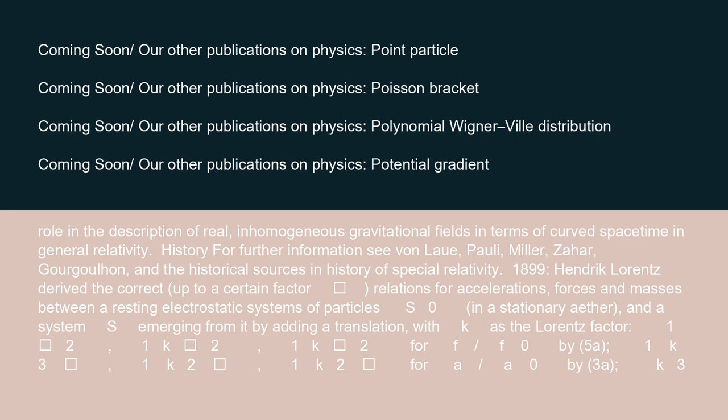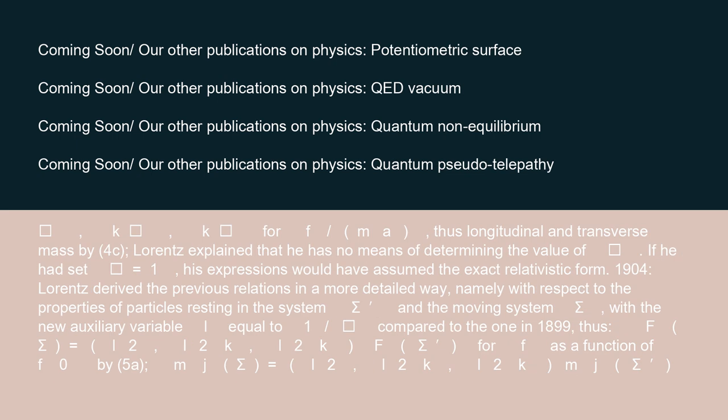History — for further information, see von Laue, Pauli, Miller, Zahar, Gurgul Han, and the historical sources and history of special relativity. 1899: Hendrik Lorentz derived the correct relations — up to a certain factor epsilon — for accelerations, forces and masses between an electrostatic system of particles S₀ in a stationary ether, and a system S emerging from it by adding a translation, with K as the Lorentz factor. Lorentz explained that he had no means of determining the value of epsilon; if he had set epsilon equals 1, his expressions would have assumed the exact relativistic form.